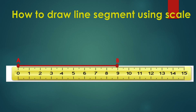Now we will learn to draw a line segment using a scale. Step 1: Mark a point in your notebook and label it as A. Place the scale so that the zero mark coincides with A. Move the sharp end of a pencil along the edge of the scale until it reaches 9 cm on the scale. Label the second end as B. AB is the required line segment and it is 9 cm.